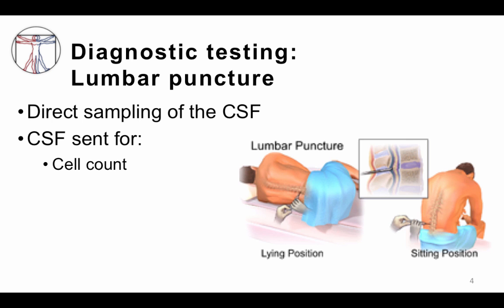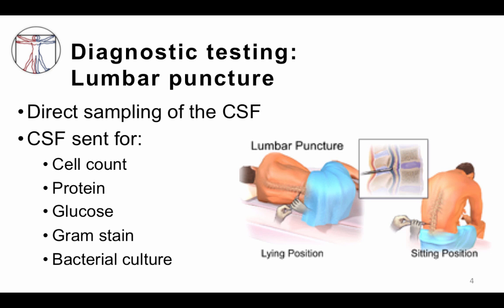The cerebral spinal fluid is sent for cell count, looking for evidence of white blood cells. The type of white blood cells may help differentiate bacterial versus viral infection. We look for protein because when there is inflammation, the protein is usually elevated. Glucose may also be decreased in the setting of infection. And gram stain — if you're able to identify bacteria on gram stain, it'll be helpful in making a diagnosis early. Ultimately, bacterial culture is sent because culture is much more sensitive than gram stain.